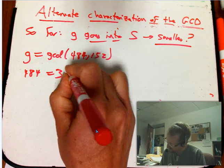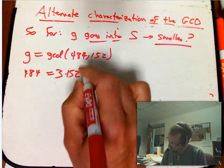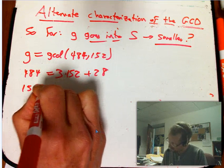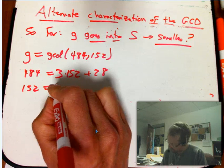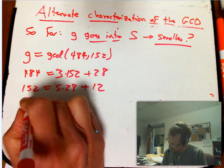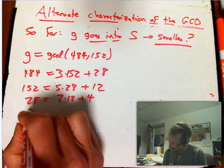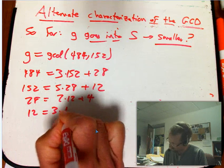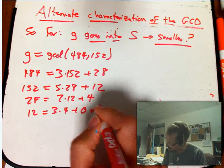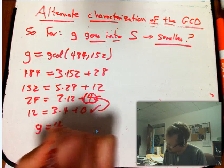So this goes in, the 152 goes in three times, 356, remainder 28. Now, 152, that's 5 times 28, because that gives you 140, plus 12. 28 is 2 times 12, 24, plus 4. And 12, 3 times 4, plus 0. So that signals that we're done, and it signals that the previous remainder was the GCD.